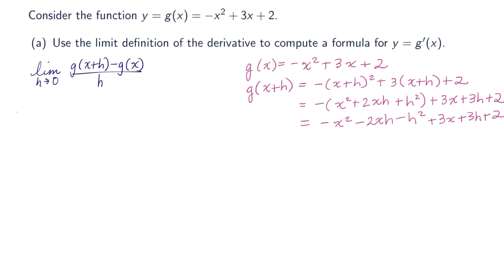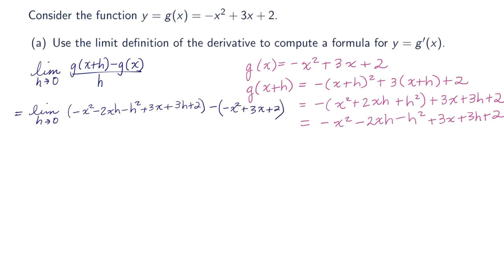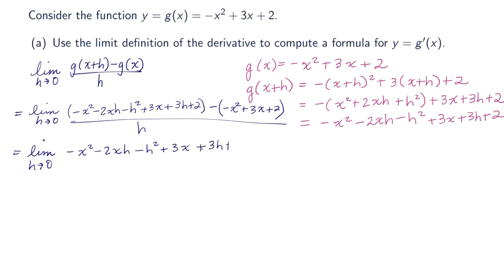So let's go back to our limit. This is equal to the limit as h approaches 0 of: negative x squared minus 2xh minus h squared plus 3x plus 3h plus 2, minus g of x, which is negative x squared plus 3x plus 2, all over h. Let me distribute the negative: plus x squared minus 3x minus 2, all over h.